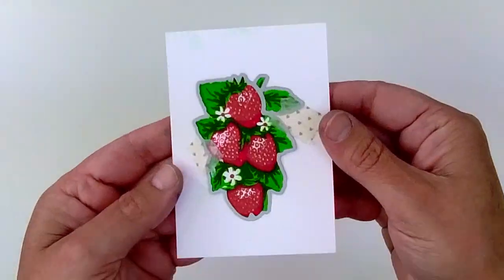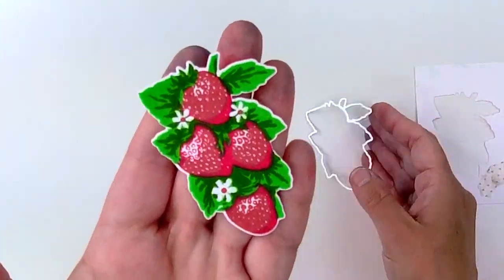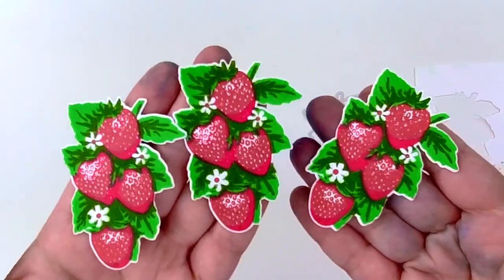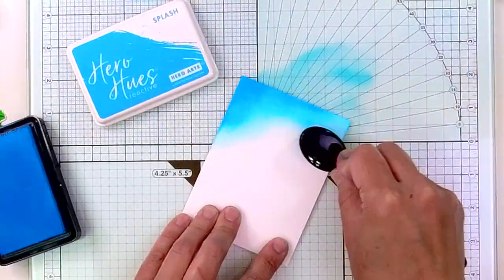Now I'm using the coordinating die to cut out all three of these strawberry bunches, and I'm ready to start thinking about putting my card together.